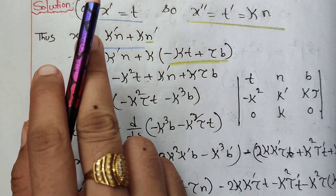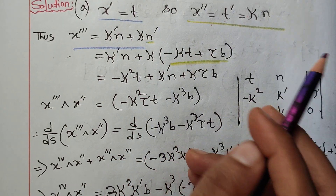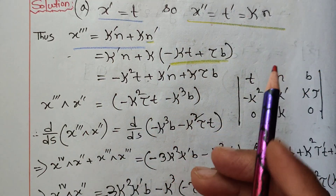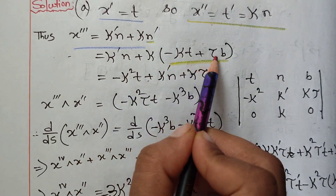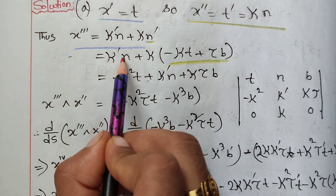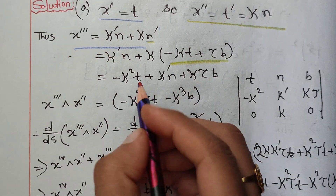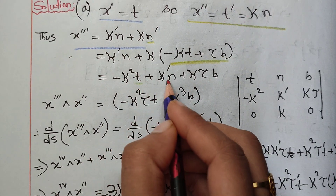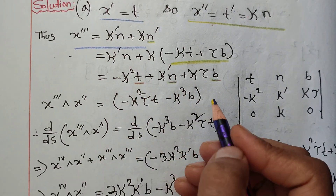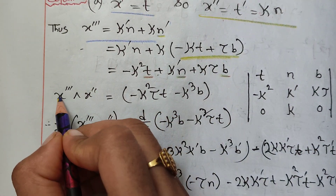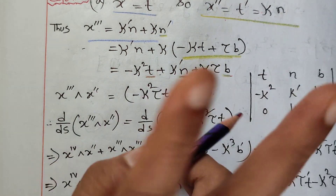x double prime, x triple prime. Then I will show you the sequence of T, N, B — the sequence of T, N, B. Now look: this is the double prime, double prime, and double prime. We will have two different functions.